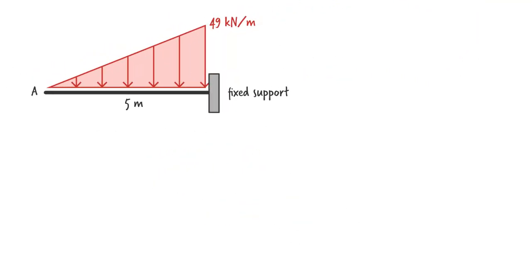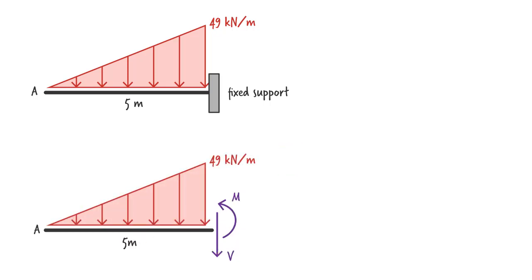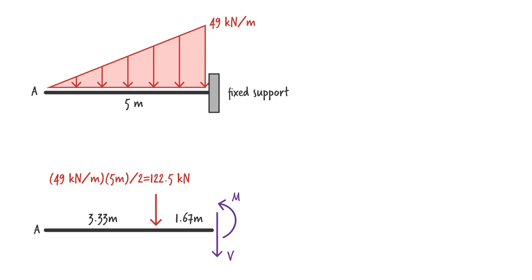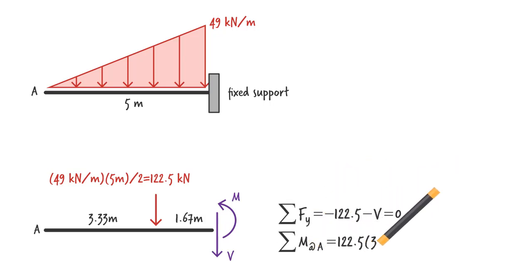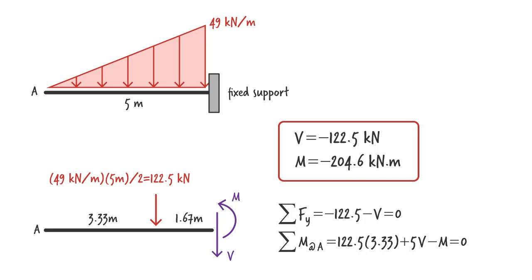Now let's determine the internal forces at the fixed end of the beam. In the case of a cantilever beam, shear and moment at the fixed support are the same as the support reactions, and they are determined the same way. We cut the beam very close to the support and draw the free body diagram of the left segment. Then we replace the distributed load with its equivalent concentrated load. The equilibrium equations for this free body diagram give us the shear and moment at the support, which also represent the support reactions.